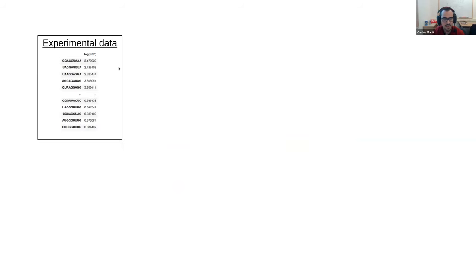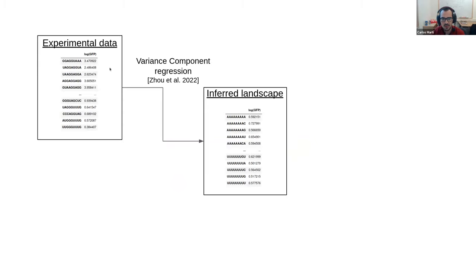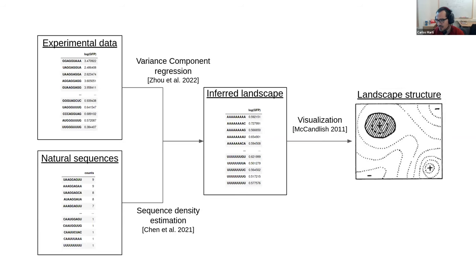To summarize a lot of work, the outcome of many of these experiments can often be summarized in a table where we have a series of sequences and their associated measurements. Our aim — using tools like the ones described — is to reconstruct the full combinatorial landscape in which we have every possible sequence of a particular length and an estimate of its phenotype or fitness. We can do that not only from experimental data but also from observations of natural sequences in a procedure called sequence density estimation.